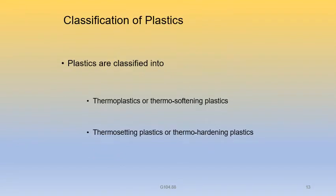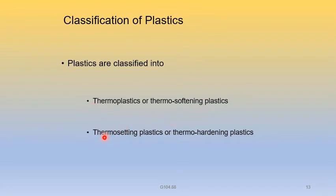Plastics are classified into two types based on heat treatment: first, thermoplastics or thermosoftening plastics; second, thermosetting plastics or thermohardening plastics.